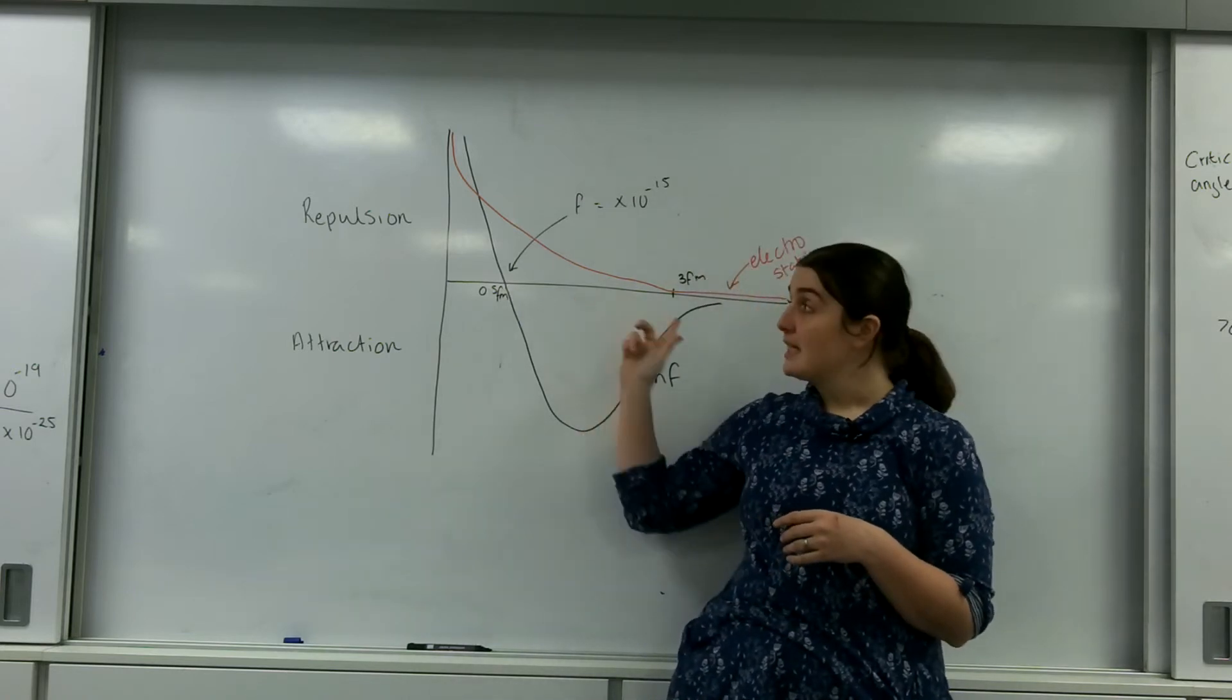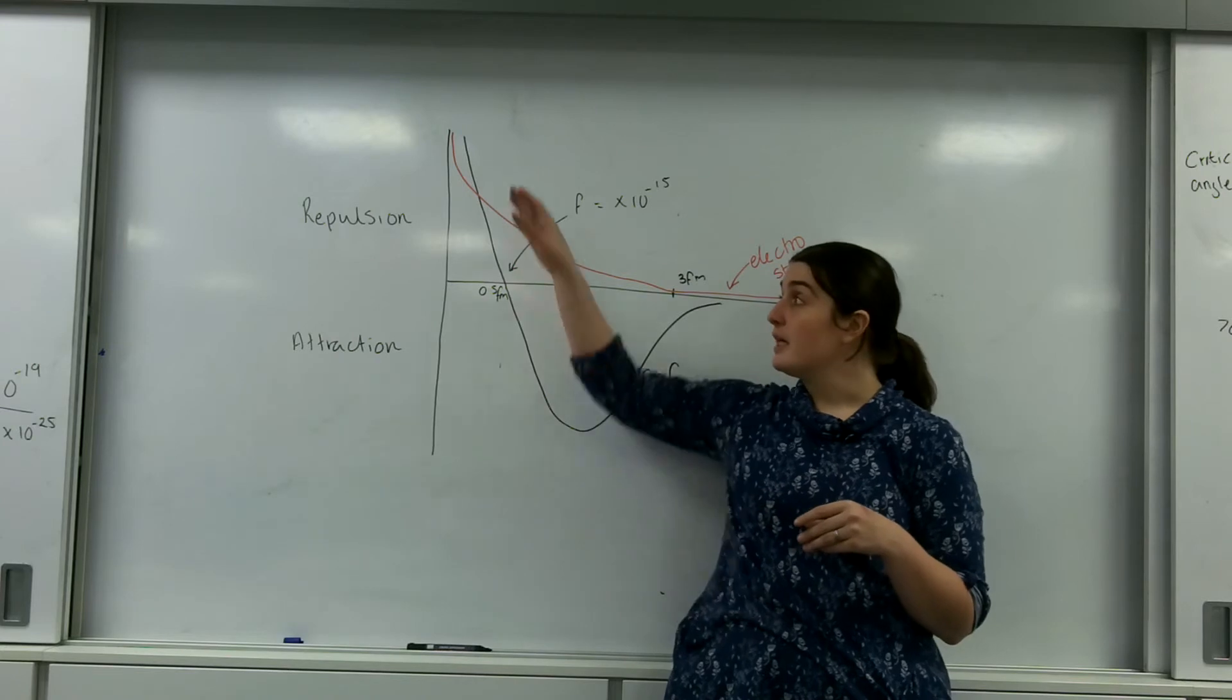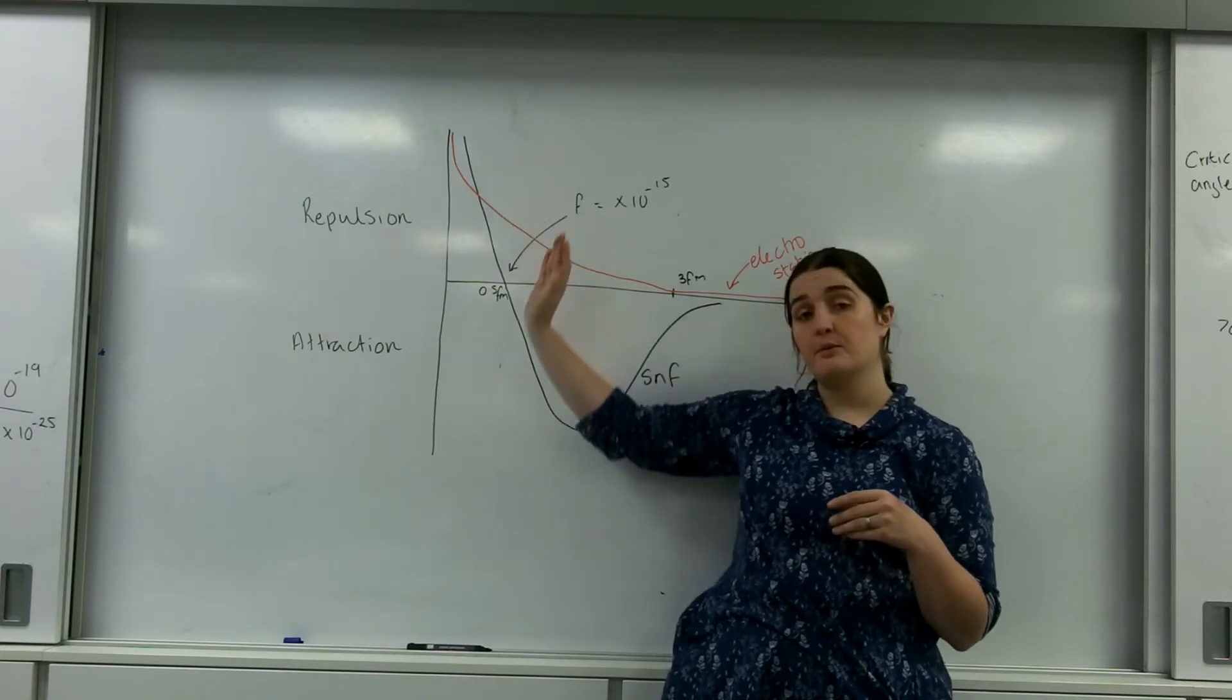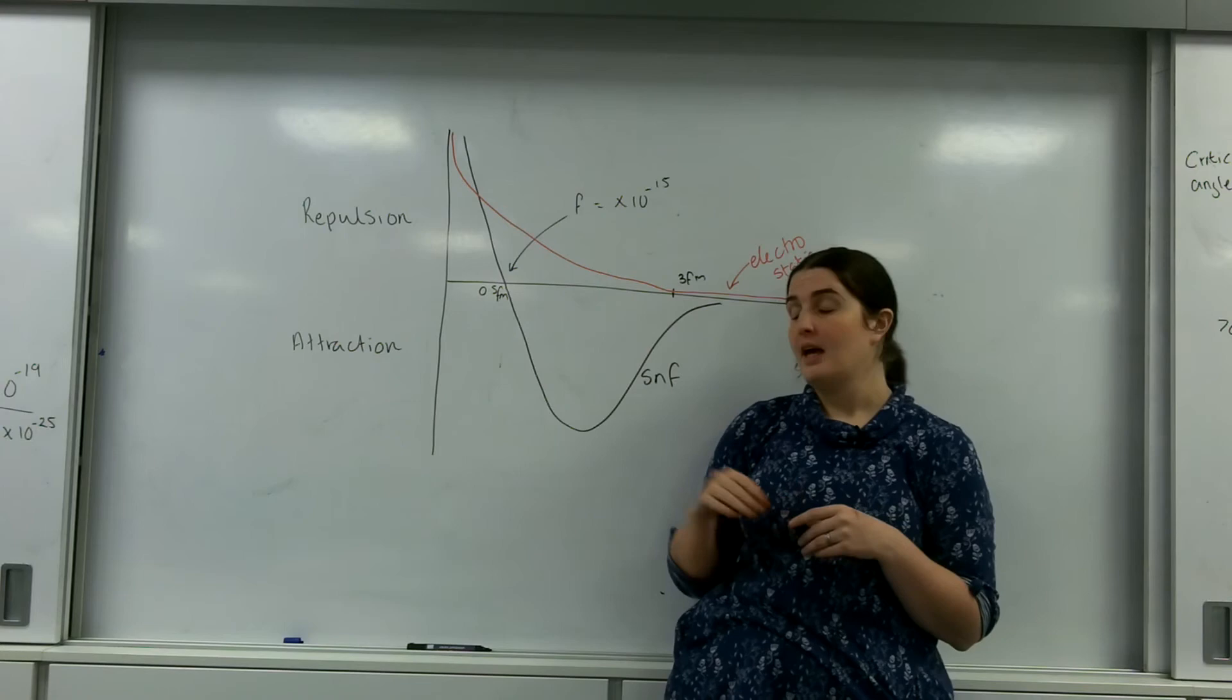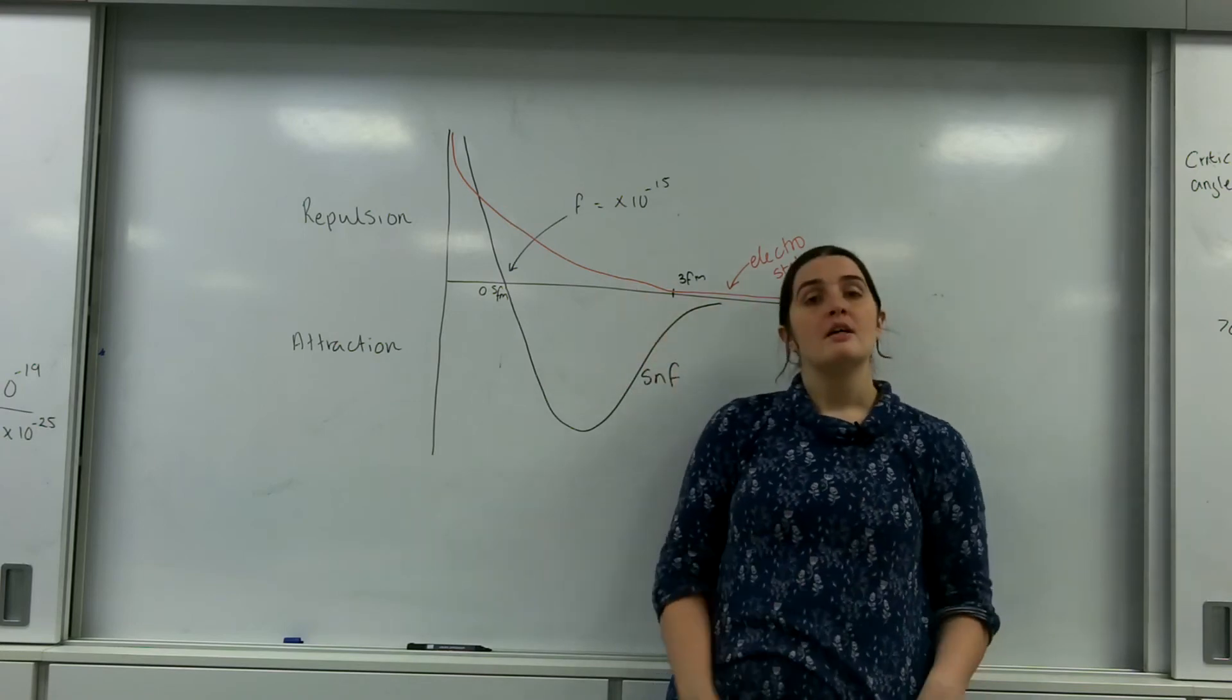We'll talk a bit about that later when we talk about decay. The key things to take from this are this graph and these numbers here. The fact that the strong nuclear force is repulsive up to 0.5 femtometres and attractive, and then it asymptotes to zero.